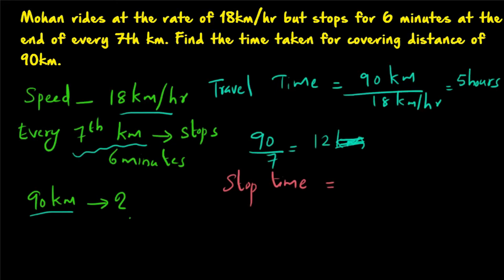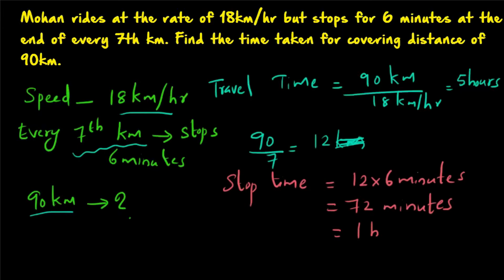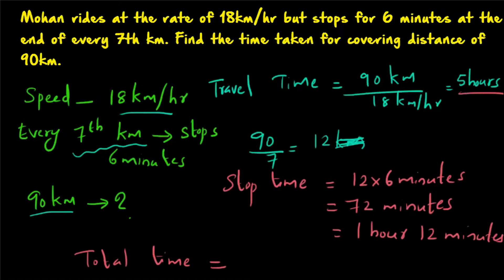12 stops times 6 minutes equals 72 minutes, which equals 1 hour 12 minutes. So his total time is travel time plus stop time: 5 hours plus 1 hour 12 minutes equals 6 hours 12 minutes. That is the total time taken for covering the distance of 90 km.